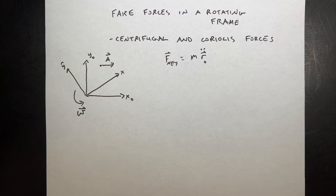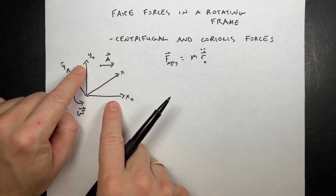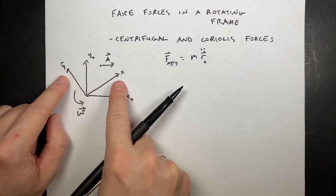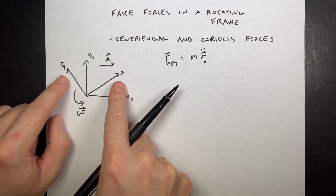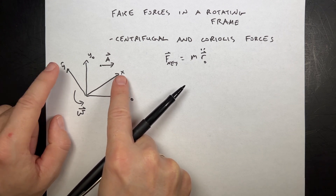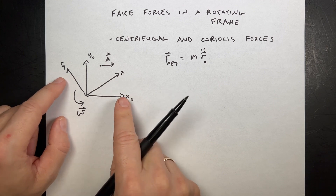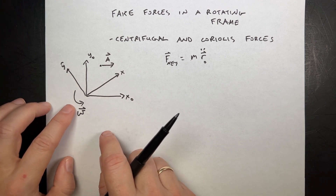Today we're just going to look at how do you deal with a rotating reference frame. So here I have my X-zero, Y-zero — it's three dimensional, but I'm not showing that. And then I have a rotating reference frame X, Y. That's the one I care about, which is why I'm calling it X and Y without extra labels. It has some angular velocity omega vector.